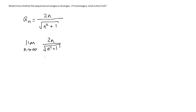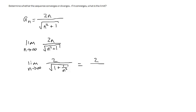The first thing I want to do is divide everything by n. So we have the limit as n goes to infinity of 2n divided by n, which leaves 2, divided by the square root of n squared over n squared plus 1 over n squared. That simplifies to 2 divided by the square root of 1 plus 1/n². As n goes to infinity, 1/n² goes to 0, leaving the square root of 1, which is 1. So the limit equals 2. This sequence is convergent and it converges to 2.